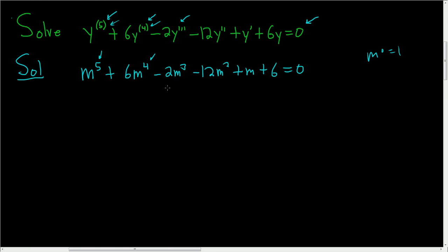We have to try to factor this. It looks like we can try factor by grouping. So we're going to pull out something here, pull out something here, and pull out something here. Looks like here we can pull out m to the fourth, and so we're left with m plus 6.